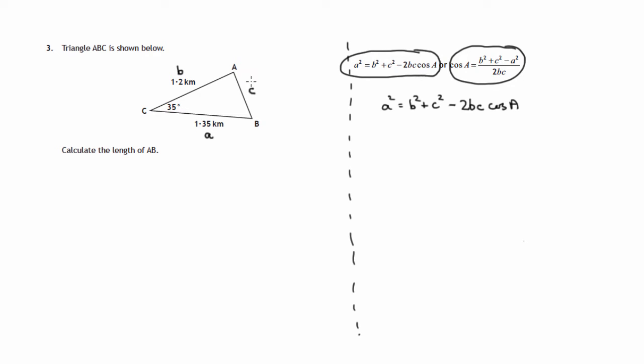Now a is not the side that we're after. We're after side c, so we have to create the version of the formula that we'll need to use. This formula is given as a², the other two sides are both squared, so the other two sides in this form would be a and b. So we square both of these, then subtract twice